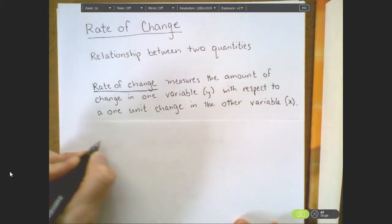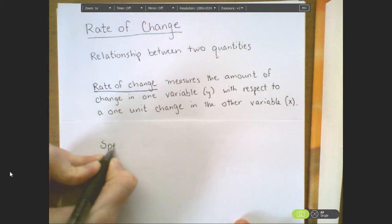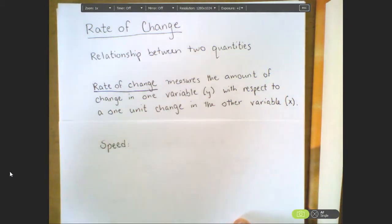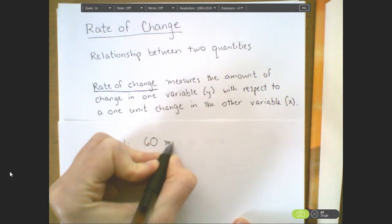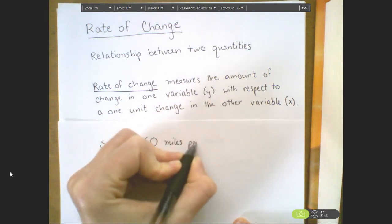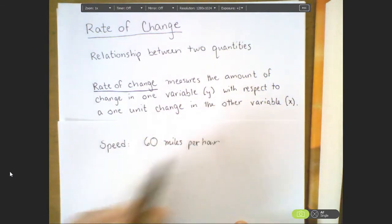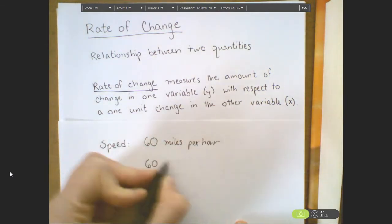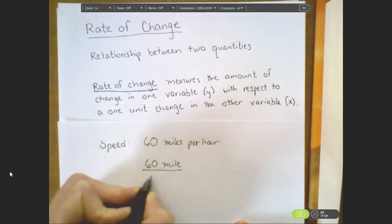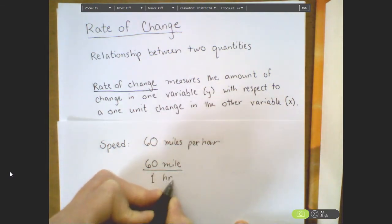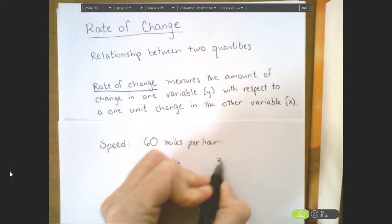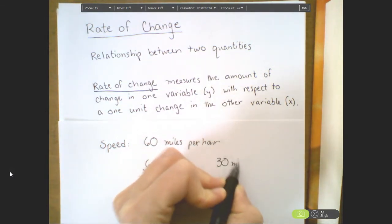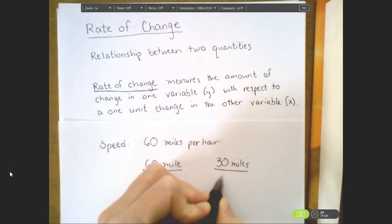One of the most common rates of change that we're familiar with is that of speed. For example, when we say that something travels at 60 miles per hour, this is a rate. This is saying that we are traveling a distance of 60 miles for every one hour change in time. This would be equivalent to saying that we went 30 miles in a half hour.